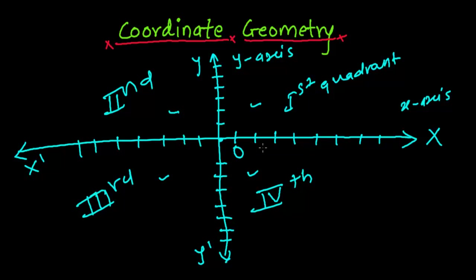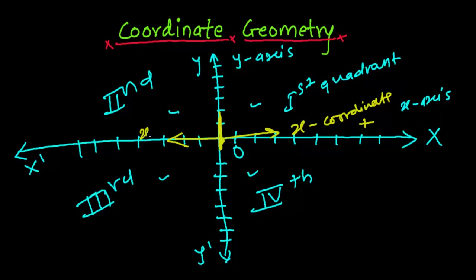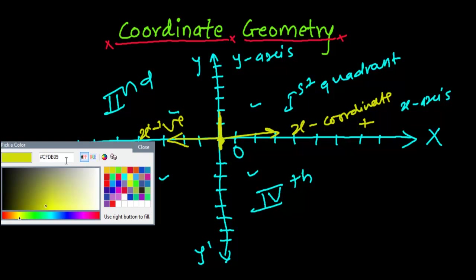On the graph, numbers are written: one, two, three, four, five, six on both sides. From the origin, if you move to the right side along the x-axis, the x-coordinate is always positive. On the left side of the origin, the x-coordinate is always negative.